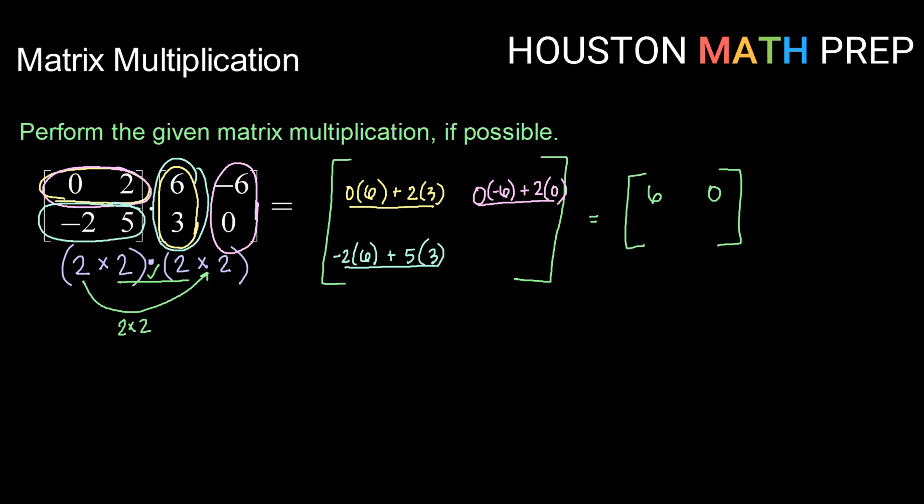And for our last spot, row 2 column 2, we are going to take row 2 and distribute it into column 2. So row 2 column 2 will be negative 2 times negative 6 plus 5 times 0. Negative 2 times negative 6 is positive 12 plus 5 times 0 is 0. So we have 12.